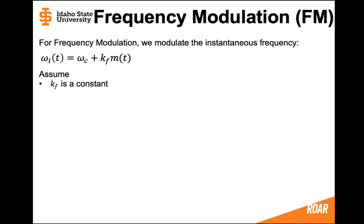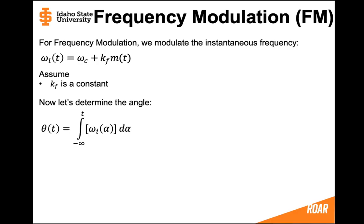Now let's think about frequency modulation. For frequency modulation, we're going to modulate the instantaneous frequency by the message. Remember, this means we're going to have to find the integral if we want to know the angle. So let's start out by assuming that kf is going to be a constant, and let's see if we can determine the angle. The angle is going to be the integral of the instantaneous frequency, so let's substitute in the instantaneous frequency.